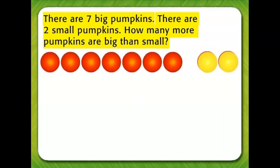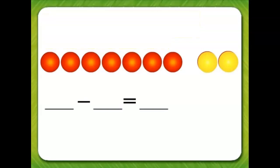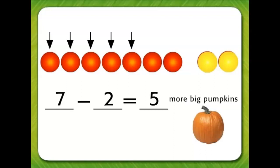Write a subtraction number sentence. Seven big pumpkins minus two small pumpkins is a difference of five pumpkins. There are five more big pumpkins.